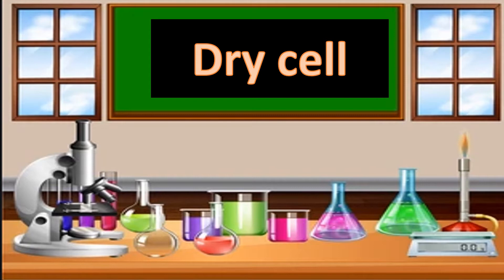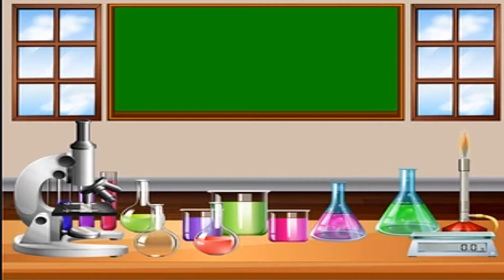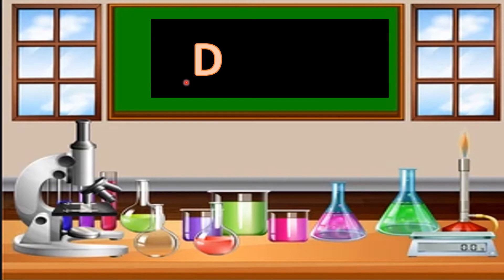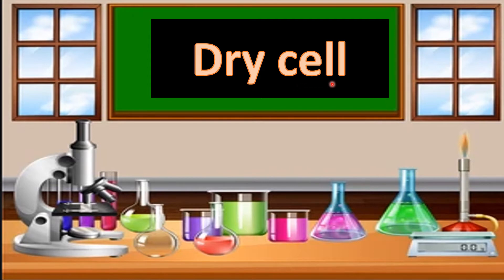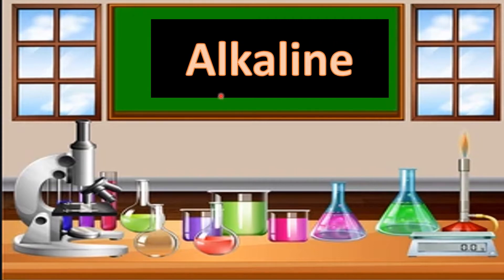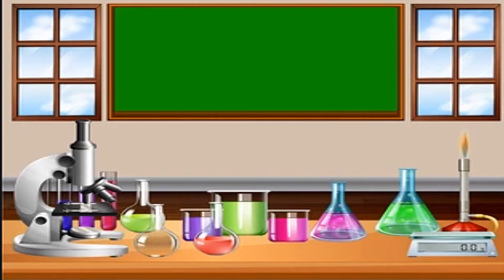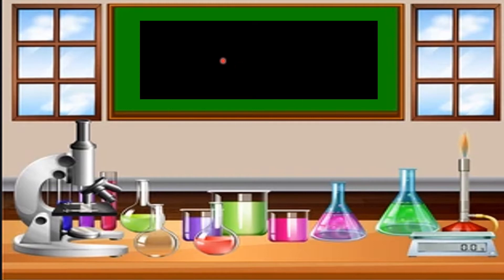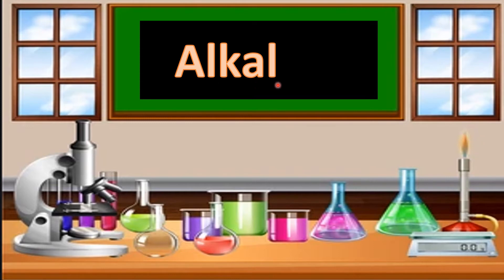The next word is dry cell. Can everybody say dry cell? Let's spell dry cell: D-R-Y-C-E-L-L. Dry cell. Next, alkaline. Can everybody say alkaline? Let's spell alkaline: A-L-K-A-L-I-N-E. Alkaline.